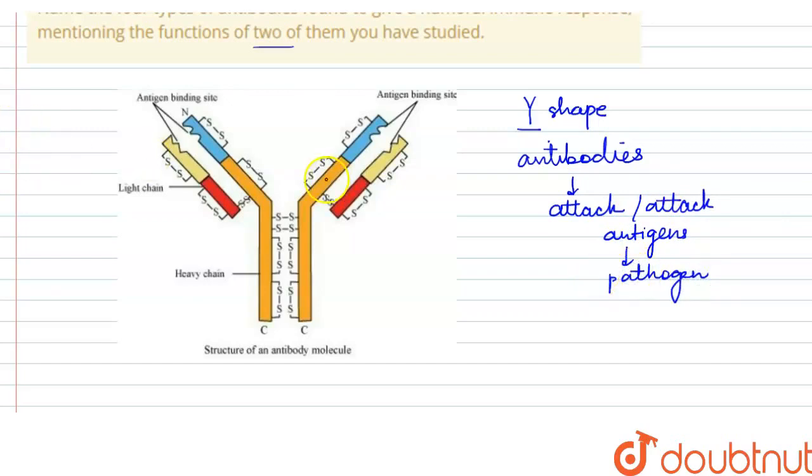Y-shape has two long chains present, which we also call heavy chains, and two light chains.